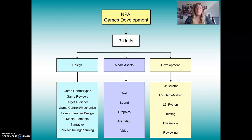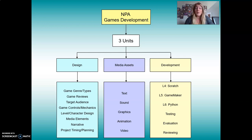Games Development is comprised of three main units. Each of the units have assessments, but this is basically what they cover. The first unit is called Design and it covers all types of computer game design. We're going to spend a lot of time looking at games that already exist, and we're also going to use that information to design our own game. We'll look at different game types and genres, making reviews for games, thinking about how game design is impacted by target audience, mechanics, controls, media elements, narrative, and project planning.